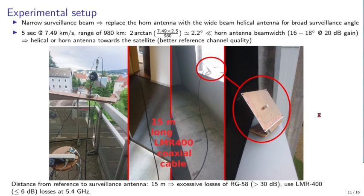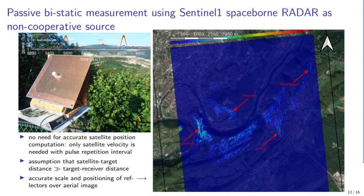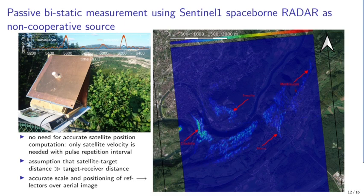In future presentations we will swap the antennas — horn toward the reference, helical toward the target. Here is another example taken from a hill in Besançon, in front of a sharp cliff. The beauty of this analysis is that you do not need to accurately know the satellite position — only the acquisition duration and satellite velocity along its orbit. The cliff and surrounding hills act as reflectors and are clearly visible overlaid on a Google Earth aerial image.